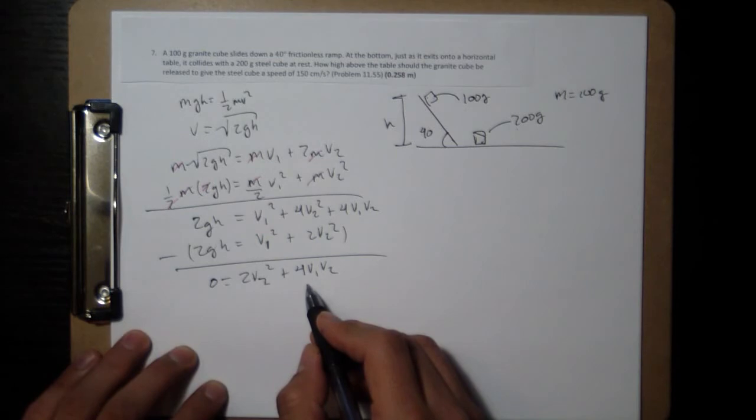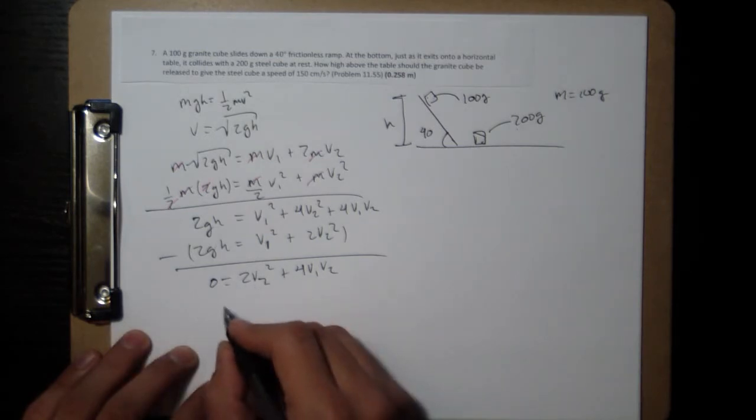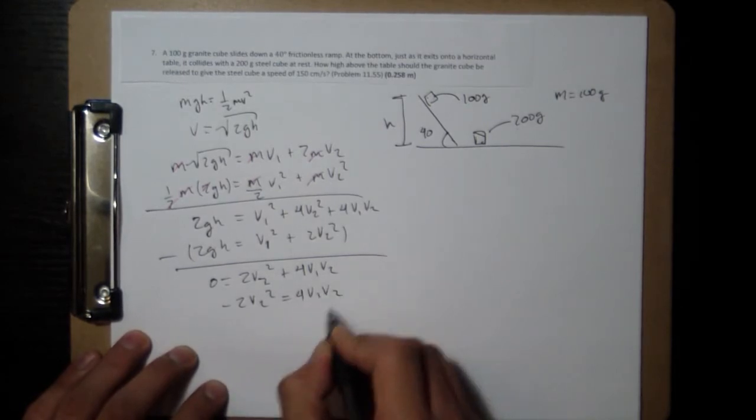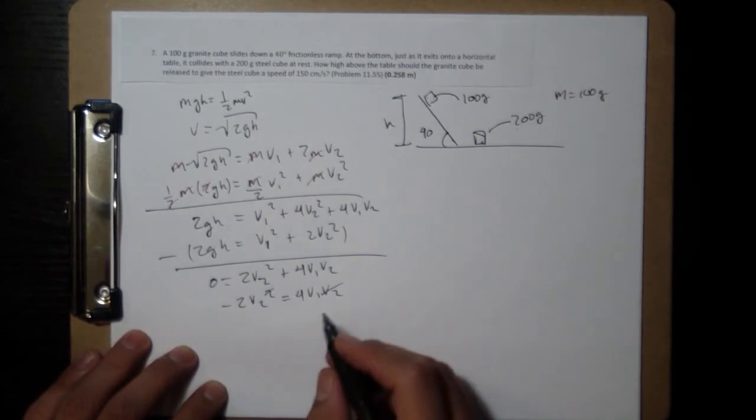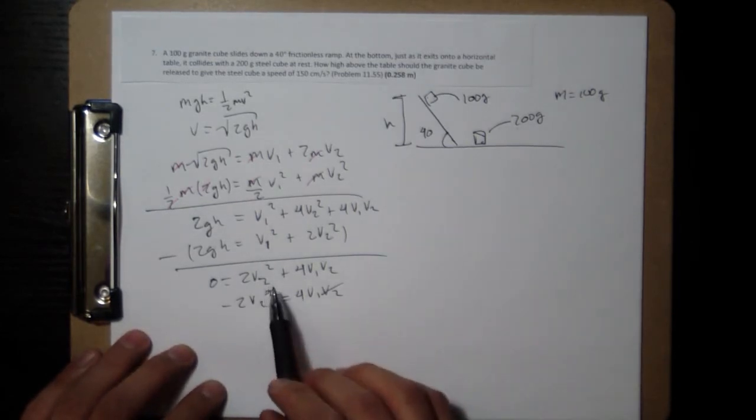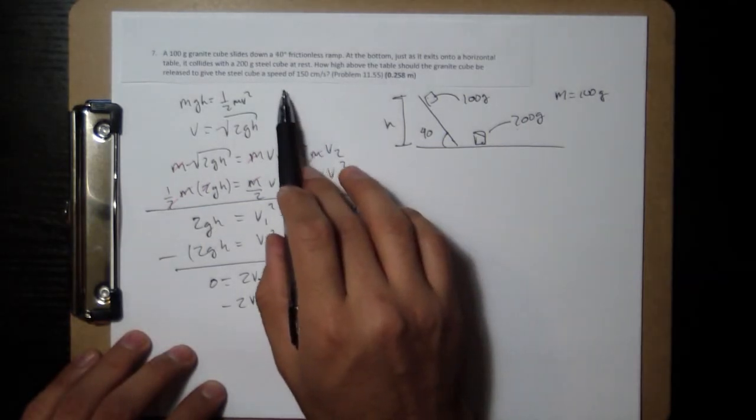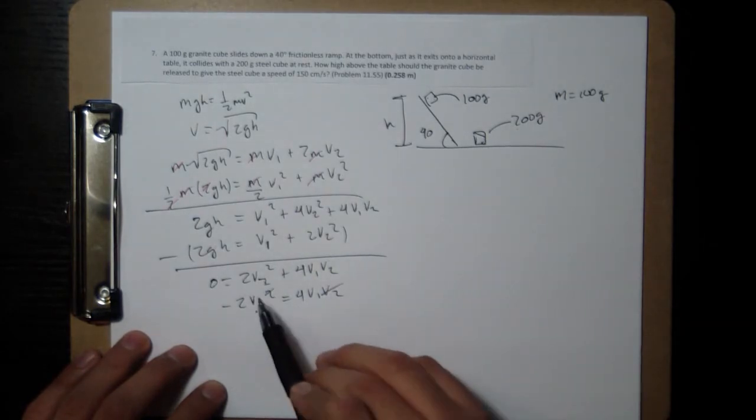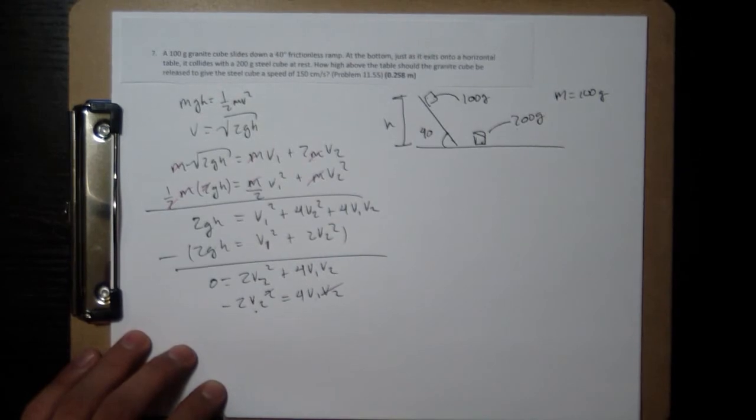And then move one of these guys over. I'll move this one over. Negative 2v2 squared equals 4v1 v2. This cancels with the v2. And let me think about what I want in the end. I'm going to be solving for, or I know the final velocity of the second one, v2. So I'm going to substitute v1 to have an equation with v2. So I'll isolate v1.